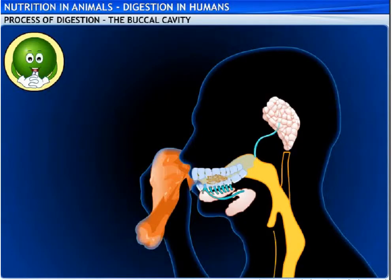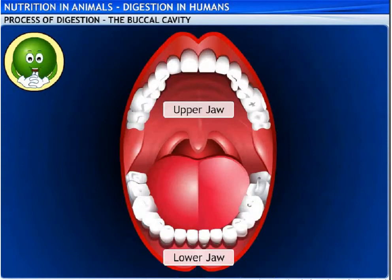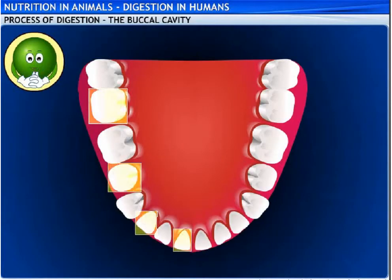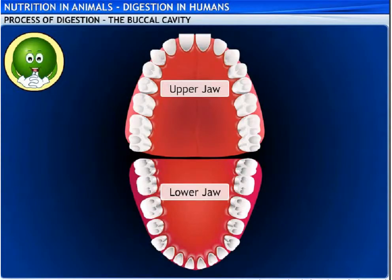The teeth break down the food into smaller pieces. Do you know the number of teeth you have? Adults have 32 teeth, each of which is rooted in a separate socket in the gums. All of them look different too. Let me show you the different teeth you have.